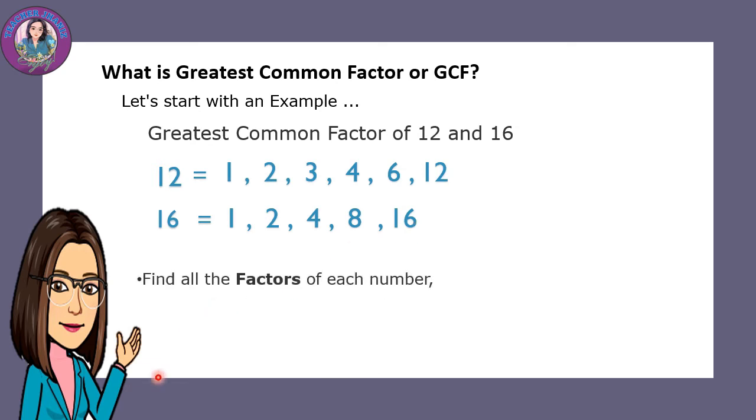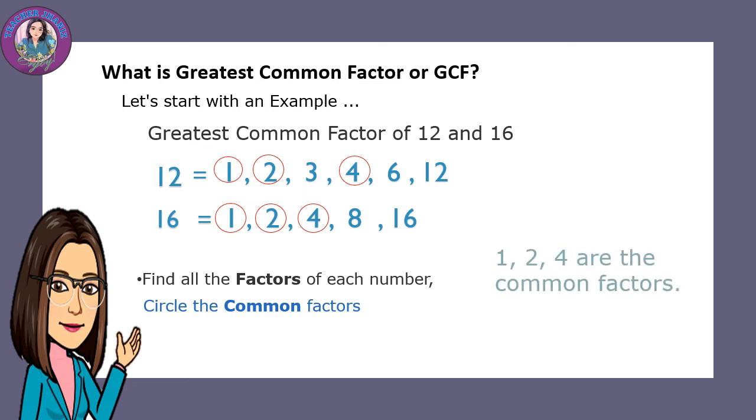Let's find all the factors of each number. We have to circle the common factors. You have your 1, 2, and 4. So 1, 2, 4 are the common factors. Next step: choose the greatest of those. Which is the greatest? 4 is the greatest common factor.